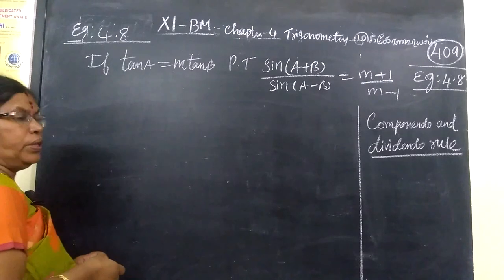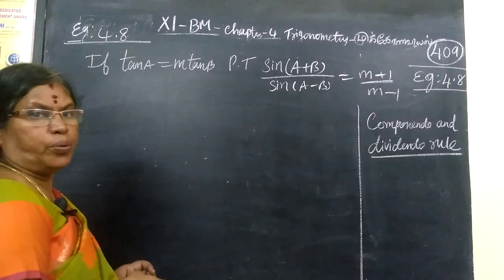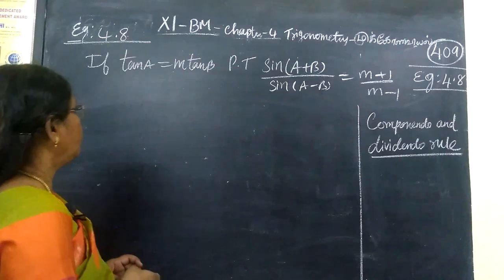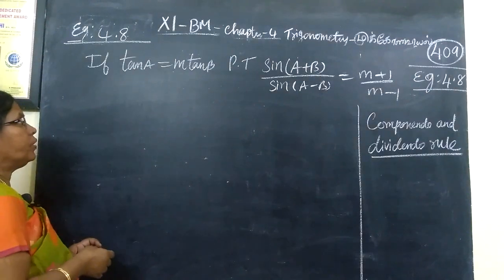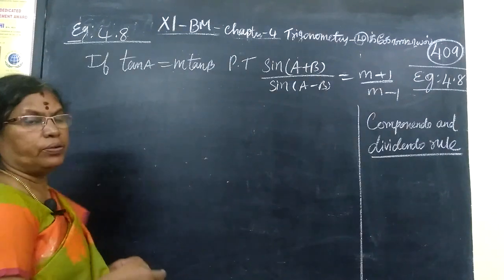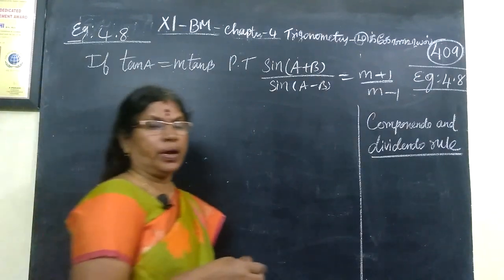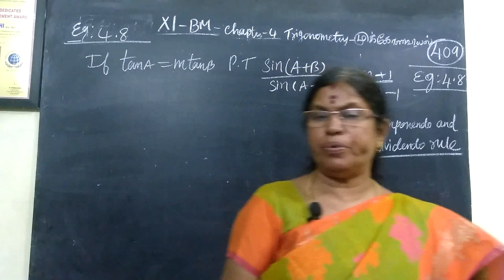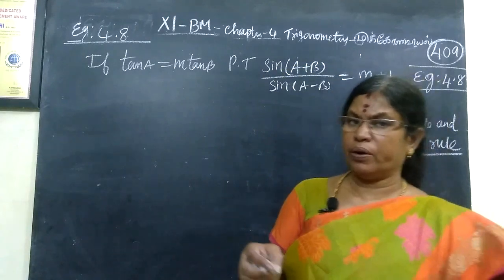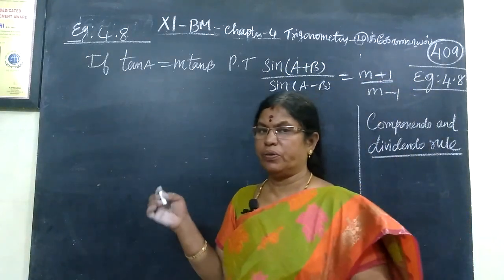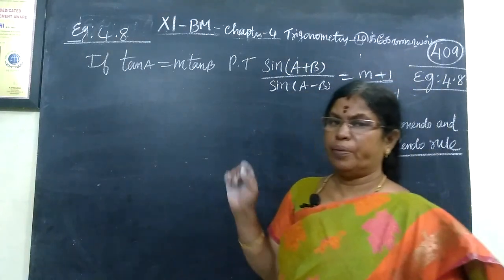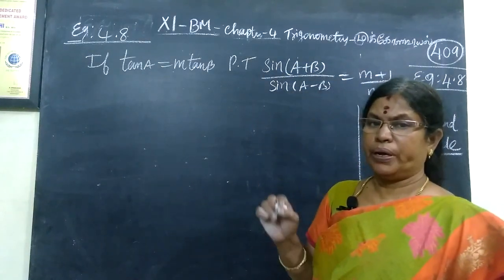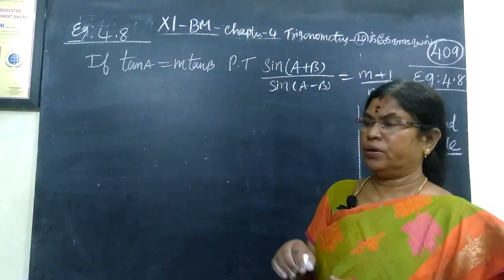If we are going to talk about example 4.8: you are given that tan a is equal to m tan b. Prove that sin(a+b) divided by sin(a-b) is equal to (m+1) divided by (m-1).